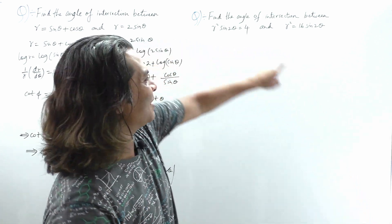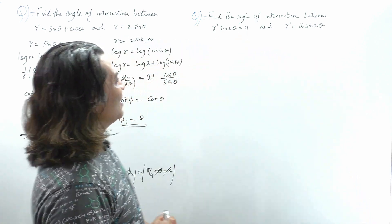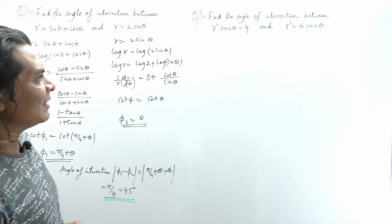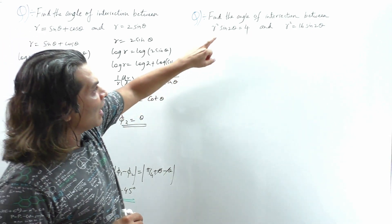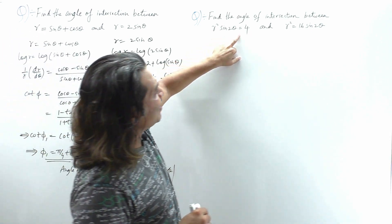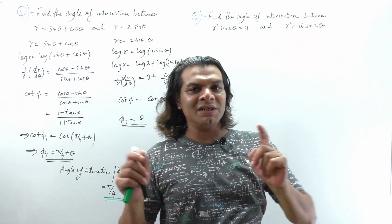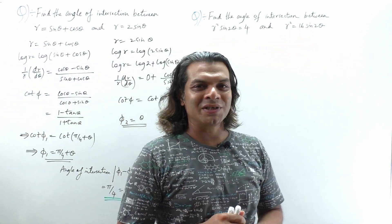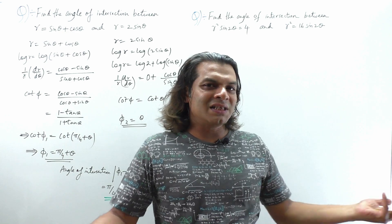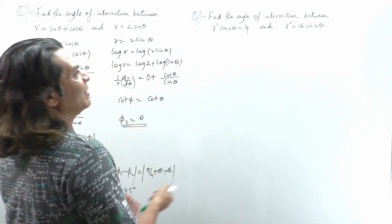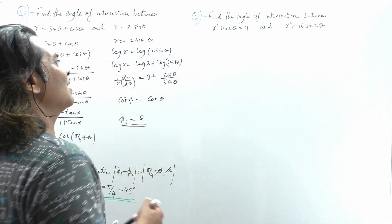Moving on to the next question. Find the angle of intersection between r²sin2θ = 4 and r² = 16sin2θ. Again, the same technique needs to be applied here.